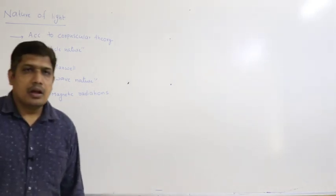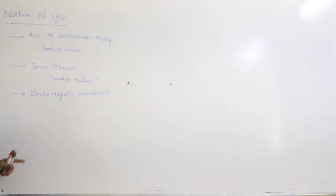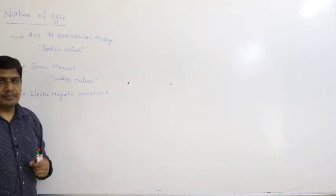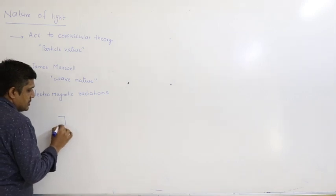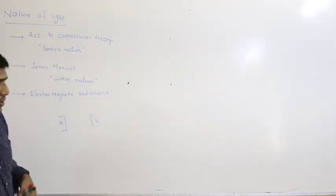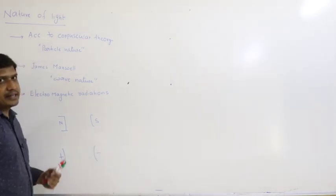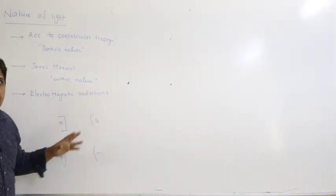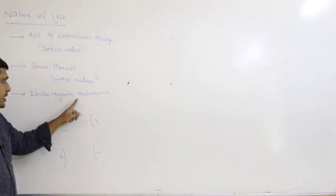Light is nothing but an electromagnetic radiation. Electromagnetic radiations can be generated or produced when an oscillating charged particle like an electron is placed in a magnetic field. Alternatively, you can apply an electric field and place an oscillating magnet in it. The radiations produced in this way are called electromagnetic radiations.